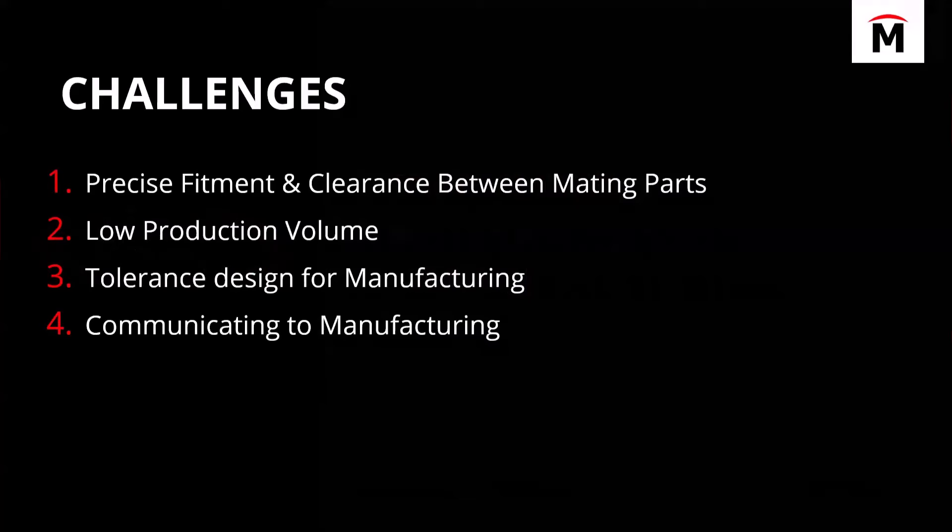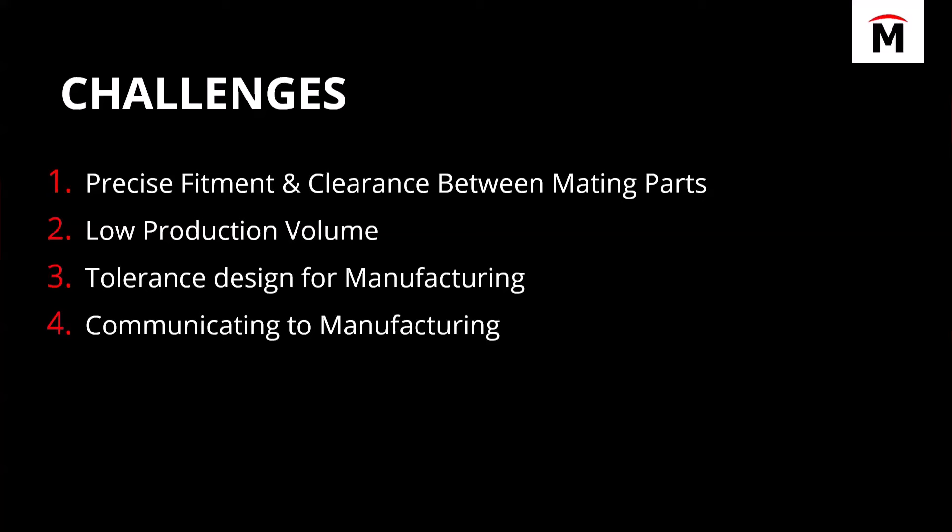One challenge I always get, especially when somebody is new to SOLIDWORKS or just new to engineering and design, they say: how do I make sure that my fitment and my clearance between the mating parts is good? Not just when I model it — because when I model it, it's perfect — but when I physically produce it and add GD&T tolerancing information, how do I know those tolerances will give me parts that go together sufficiently? We're going to tackle that today.